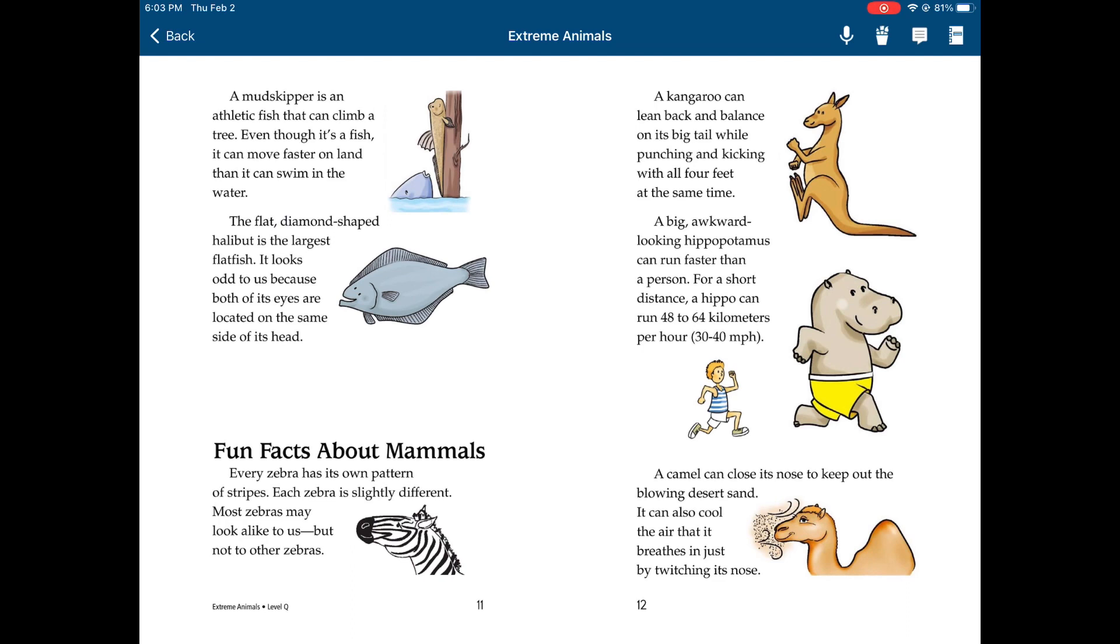Fun facts about mammals. Every zebra has its own pattern of stripes. Each zebra is slightly different. Most zebras may look alike to us, but not to other zebras. A kangaroo can lean back and balance on its big tail while punching and kicking with all four feet at the same time. A big, awkward-looking hippopotamus can run faster than a person. For a short distance, a hippo can run 48 to 64 kilometers per hour.